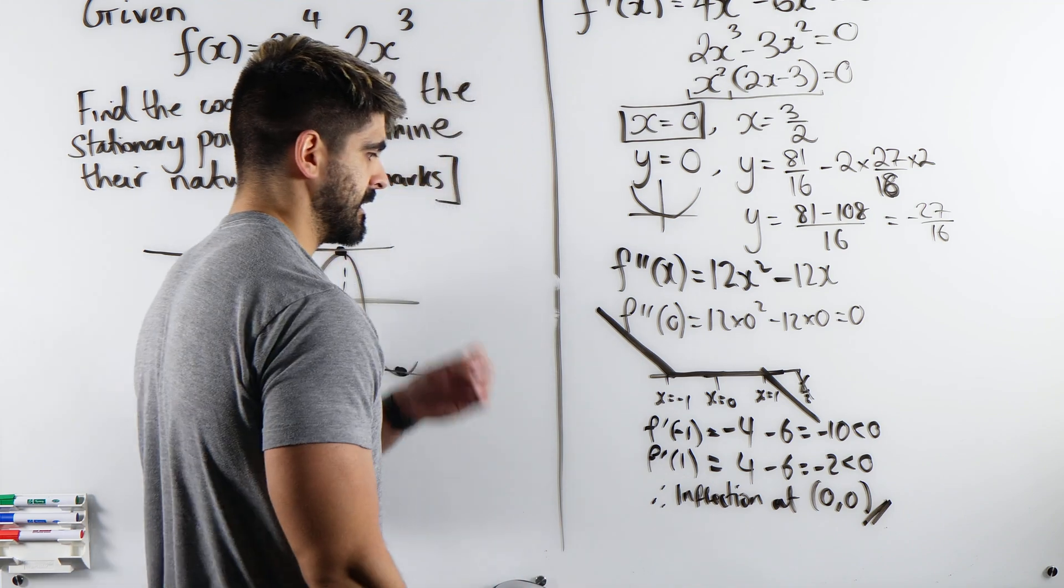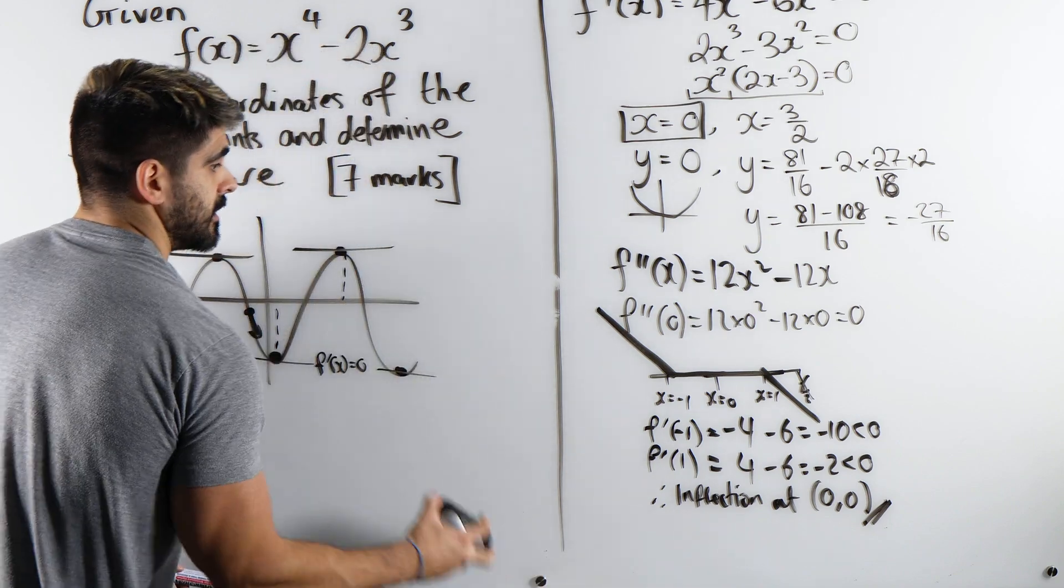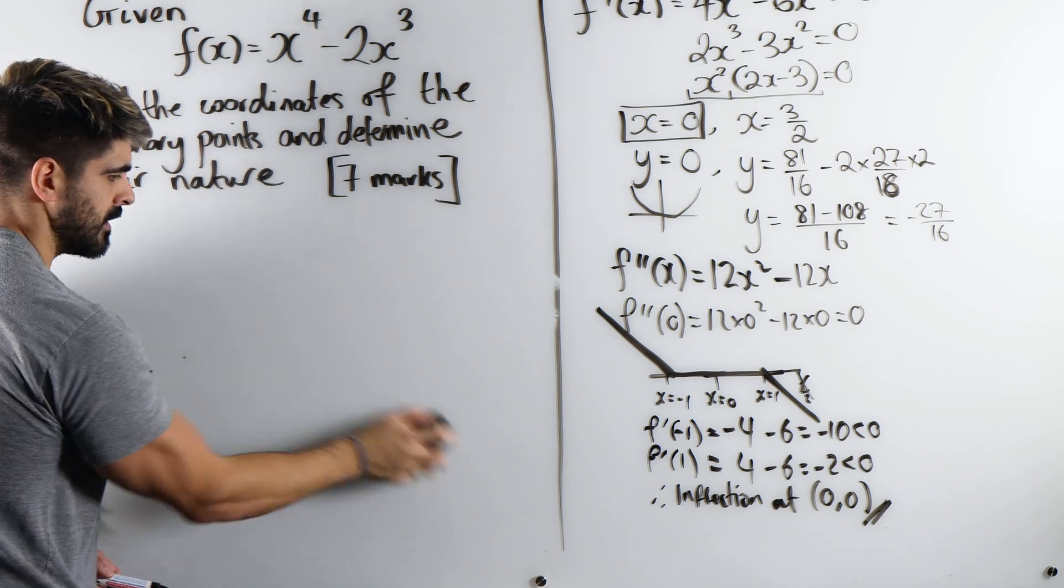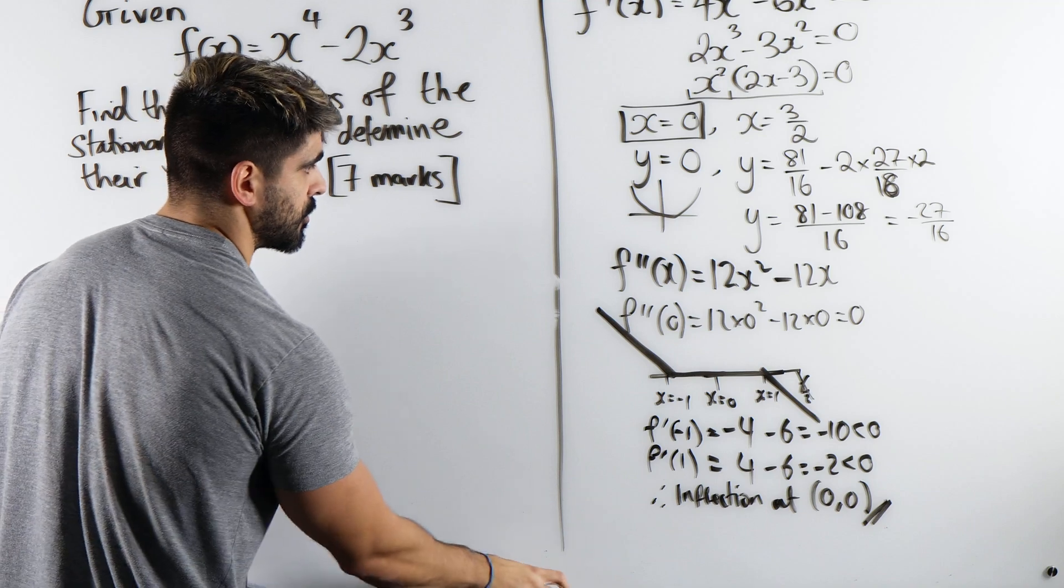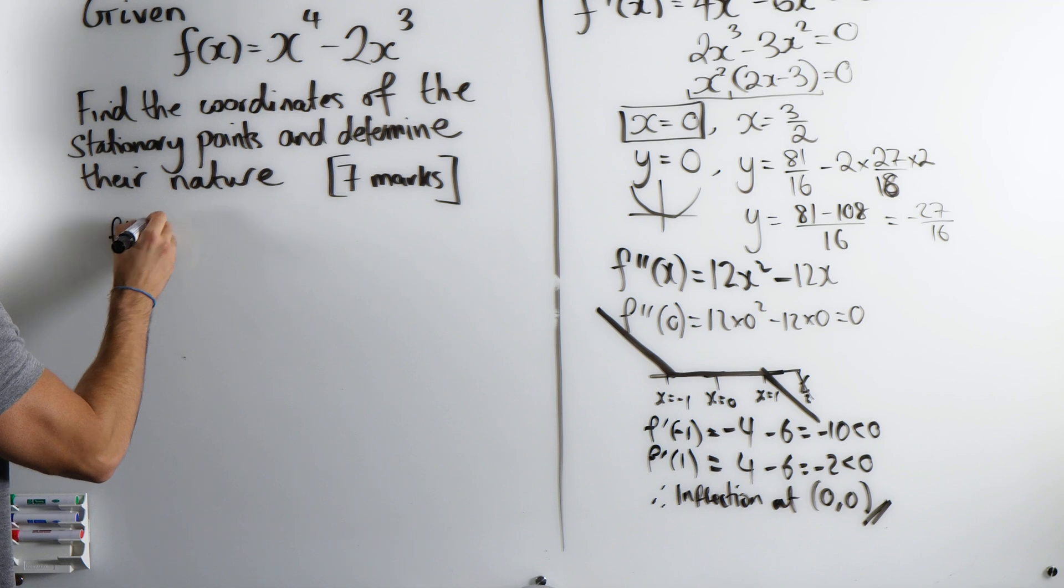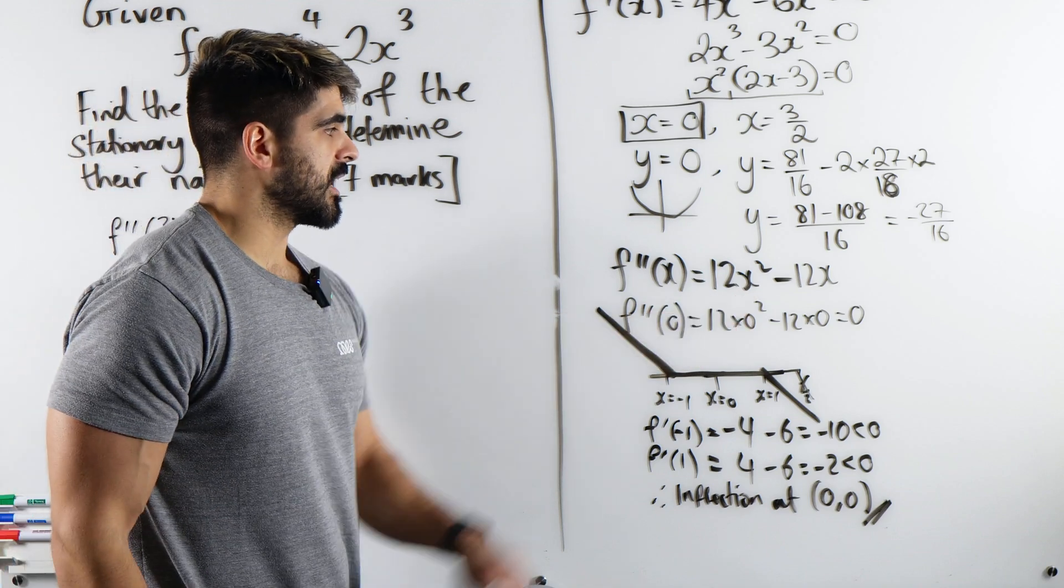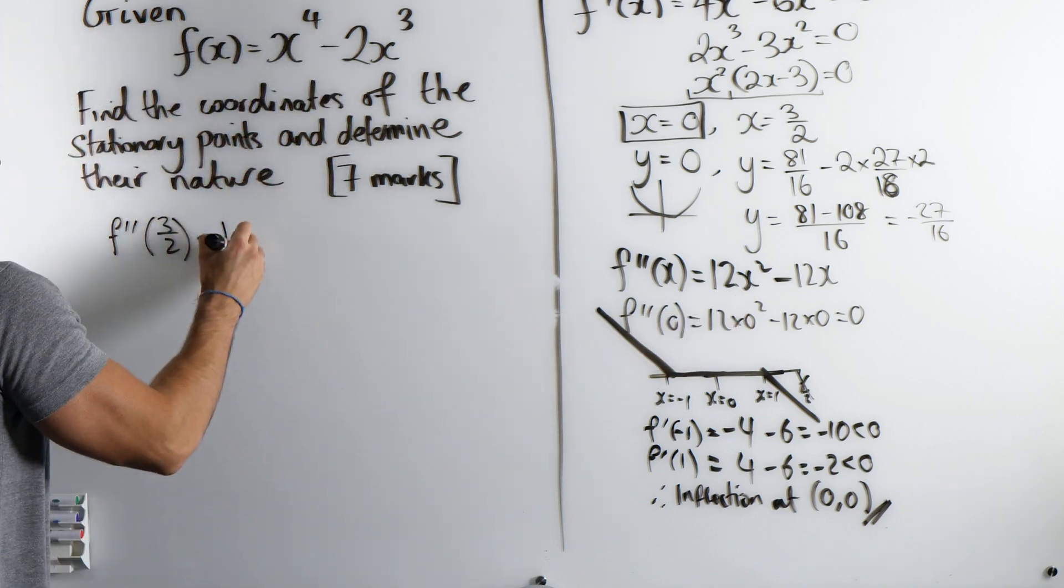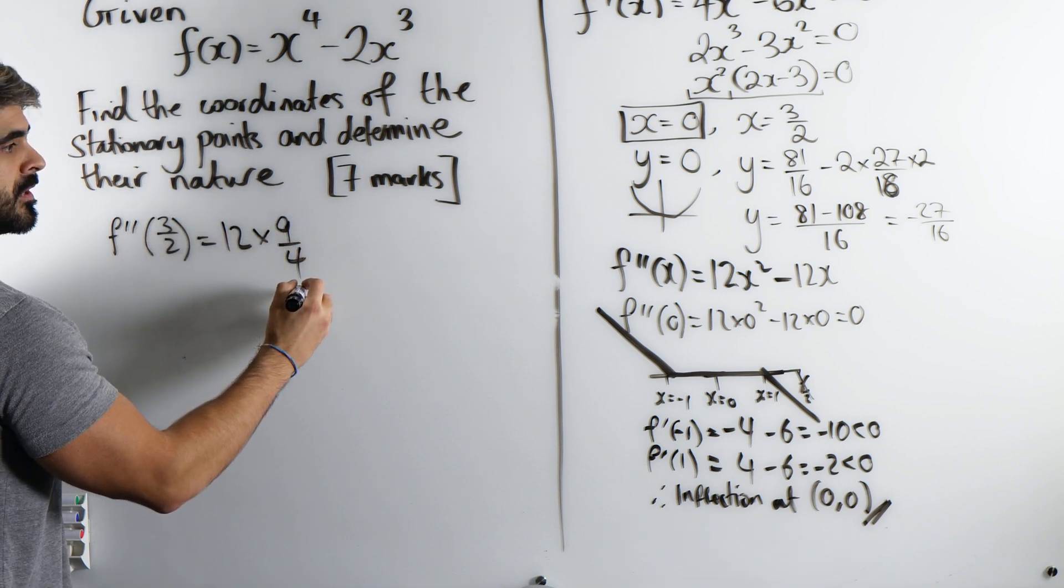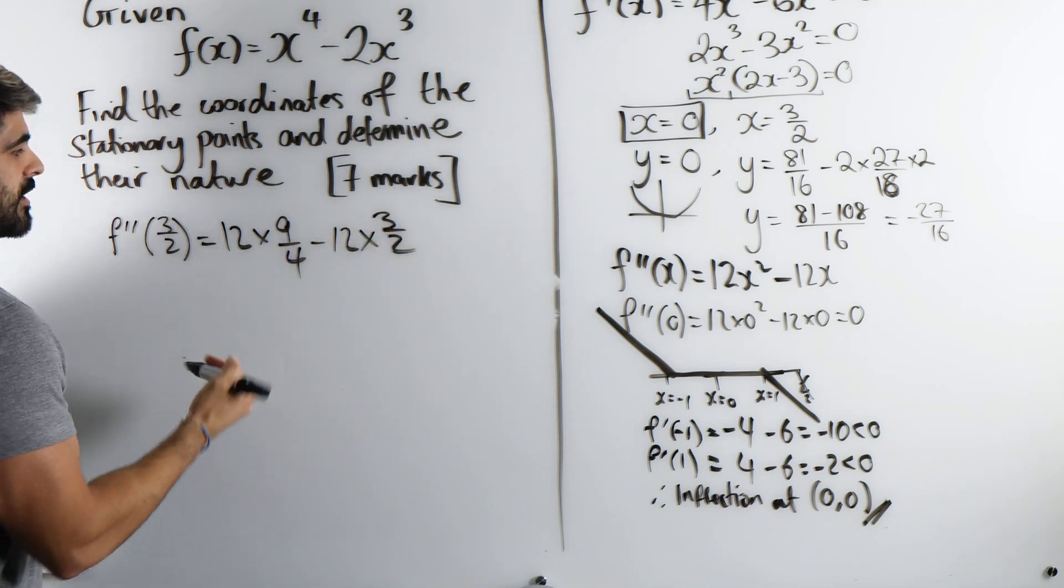All right? I might just do it down here. We'll do it here. So we have an inflection point there. What about at 3 over 2? So we're going to sub into here. So f'' at 3 over 2. 12 times 3 over 2 squared. When you square that, you get 9 over 4. Minus 12 times 3 over 2. Work this out. Remember, this is still a non-calculator.